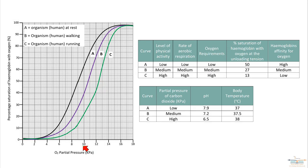You can confirm that very simply. If you just choose a partial pressure of oxygen, let's say 10, you go up to the green line and we'll say that the percentage saturation is about 23. The green line is the furthest to the right. If we carry on up to the purple line it's 40, and if we carry on up to the black line it's around about 65.